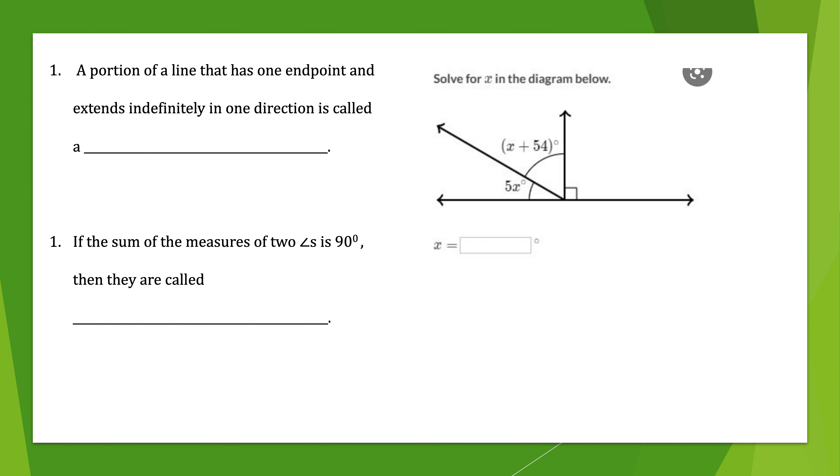Three more for you to do. Very strange. They say one and one and then nothing over there, but go ahead. Handle those three. Okay. A portion of a line that has one end point and extends indefinitely in one direction is called a ray. Right. If the sum of the measures of two angles is 90 degrees, then they are called complementary.